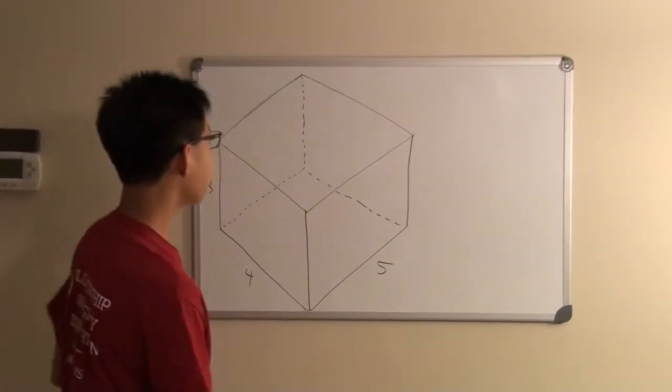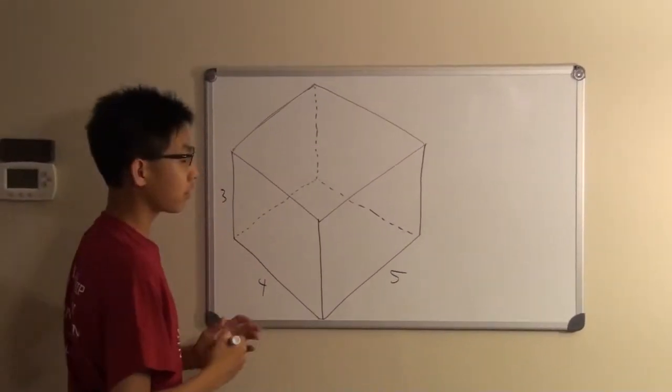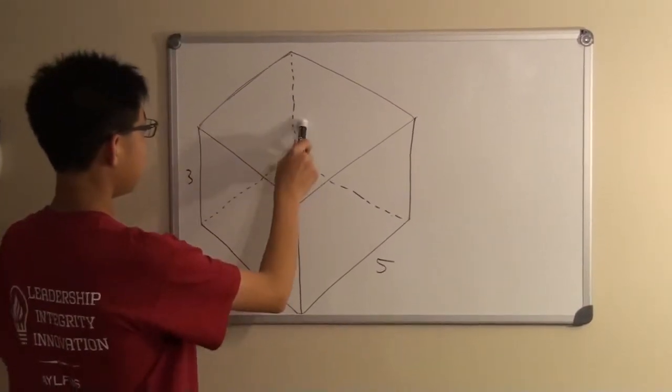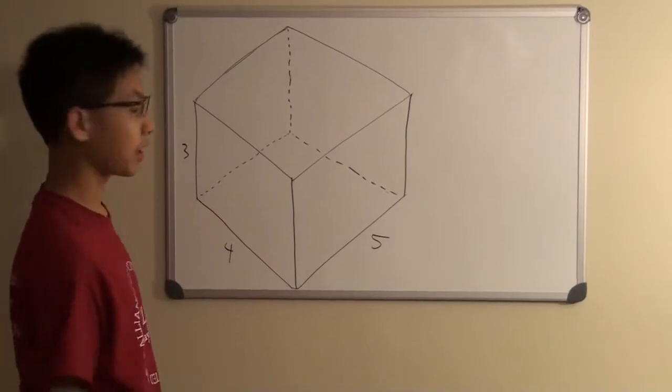Okay, so in the problem they want us to find the volume of an octahedron that would form if you connected the centers of all the faces of the following rectangular prism.